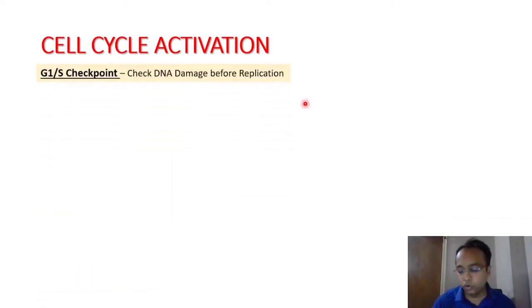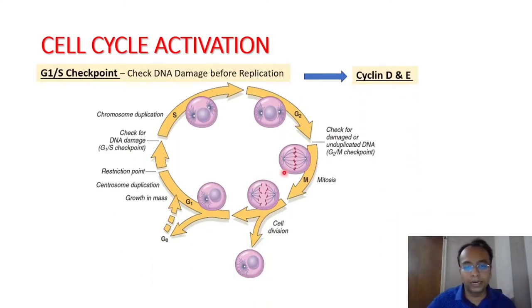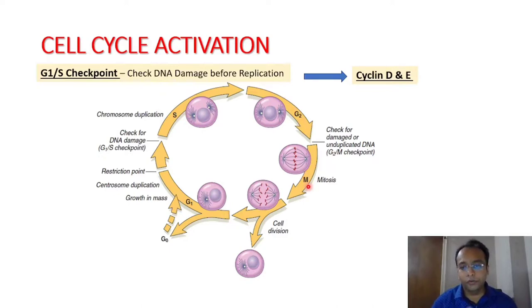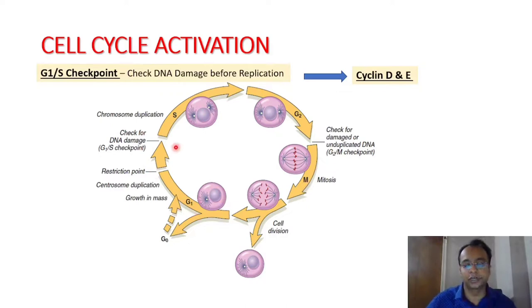Before we understand tumor suppressor genes in detail, you need to know about the cell cycle. Every cell undergoes sequential cell cycle movement: from G0 into G1, then synthetic phase (S), then G2, and finally mitosis (M phase). There are two important checkpoints: one at the G1/S transition and the second at the G2/M transition.